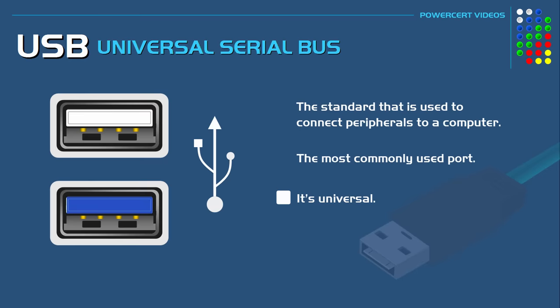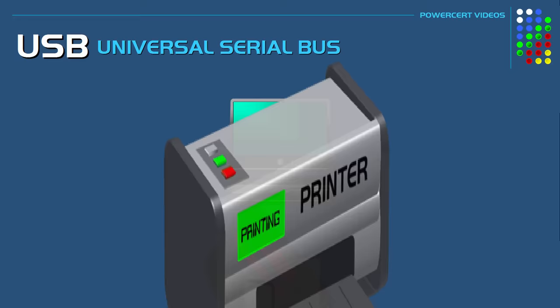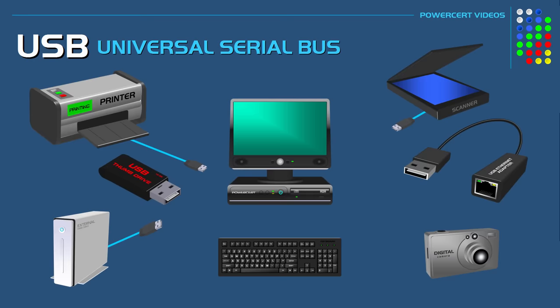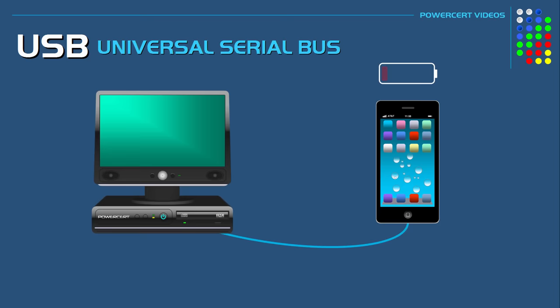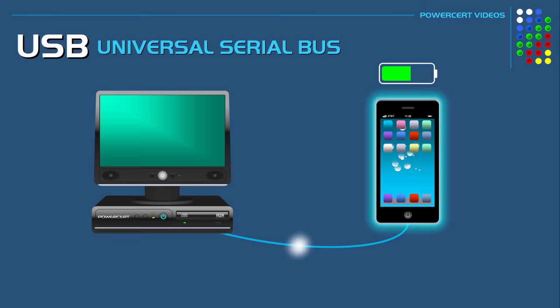The USB port is used to connect many different kinds of devices such as keyboards, mice, cameras, printers, scanners, external hard drives, and flash drives. They can even do networking and so much more. It's also used to charge devices such as cell phones. Desktops and laptops will have several USB ports.